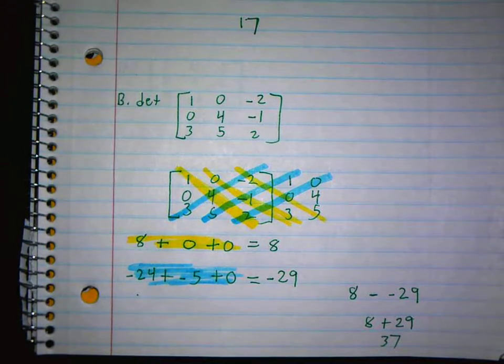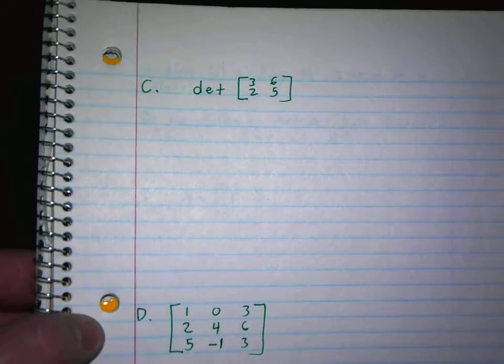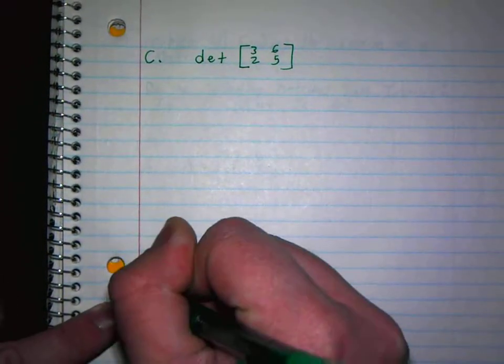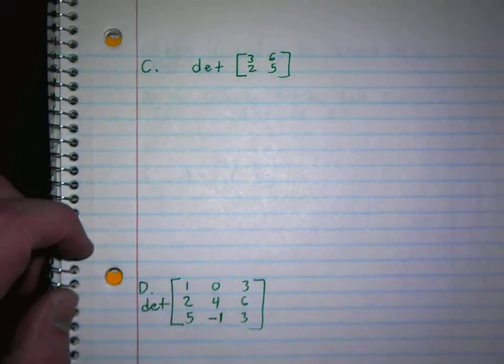So what I want you to do is I have a determinant of a 2 by 2 and a determinant of a 3 by 3. I actually need to add in the word DET here. I want you to find the determinant of both. Thank you.